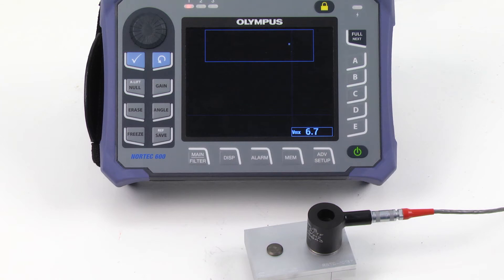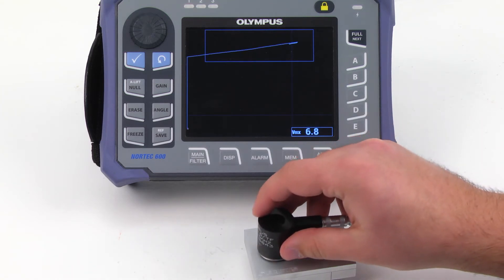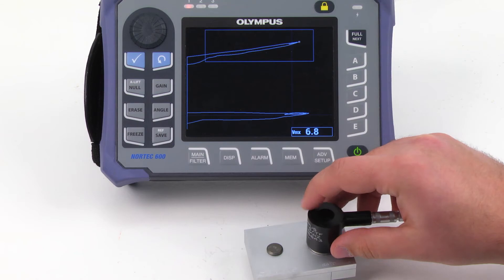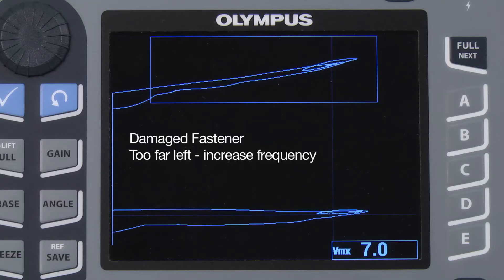Place the probe over the good fastener and then the damaged fastener. Both fasteners should be separated by height only. If the damaged fastener is too far to the left, increase the frequency. If the damaged fastener is too far to the right, decrease the frequency.